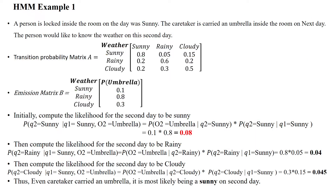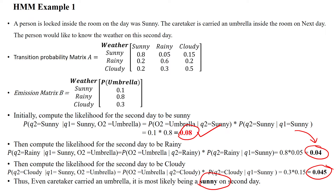Comparing the three probability values — 0.08 (sunny), 0.04 (rainy), and 0.045 (cloudy) — the maximum probability value is 0.08. Therefore, today is most likely sunny. This is how the Hidden Markov Model is used to predict a hidden state: today's climate is the hidden state, identified using the observation (umbrella) and the known previous state (yesterday was sunny).